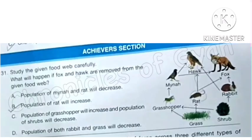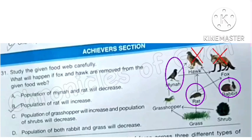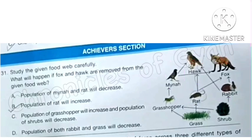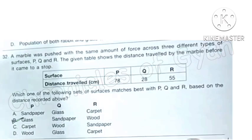Question 31: Study the given food web carefully. What will happen if fox and hawk are removed from the given food web? Hawk and fox consume myna, rat and rabbit. So if hawk and fox are removed, so their population will increase. When hawk and fox are not staying, who will eat myna, rat and rabbit? So it is obvious that their population will increase. Therefore, option B: Population of rat will increase is the correct answer.